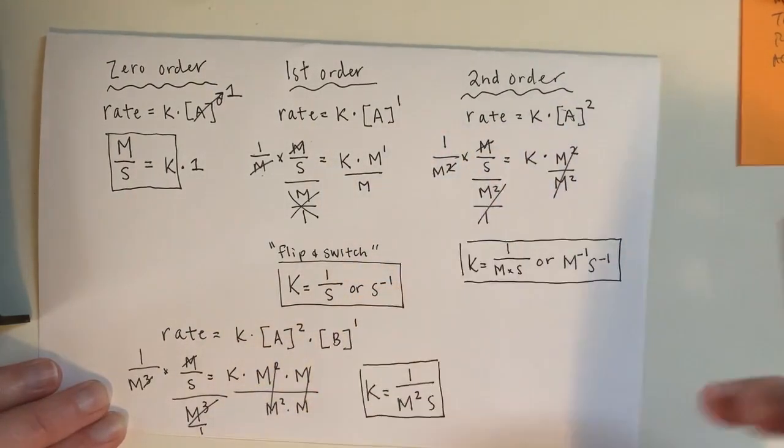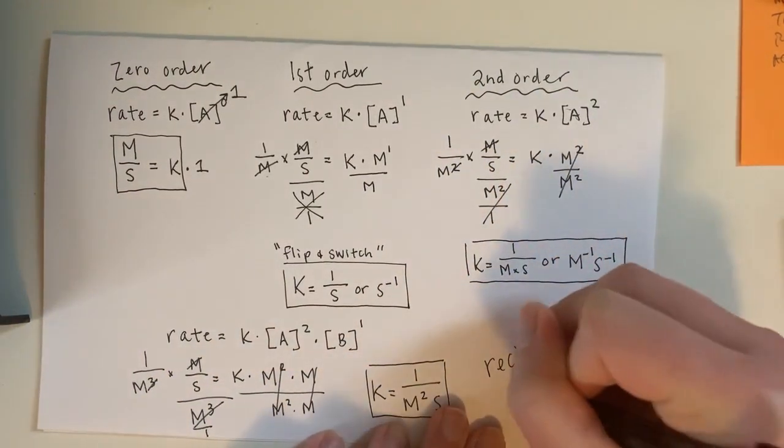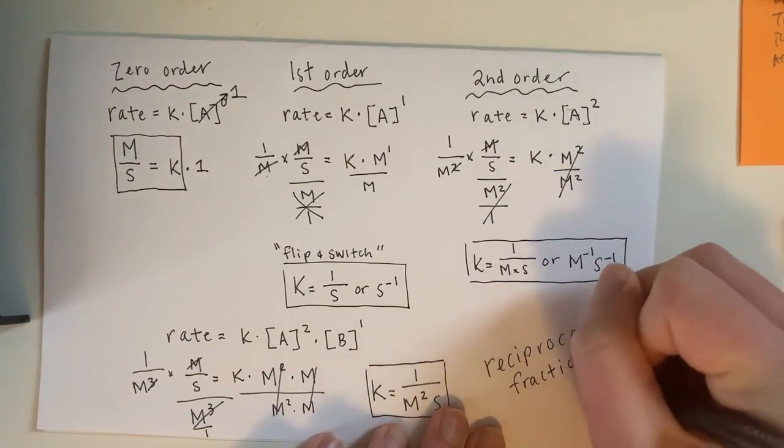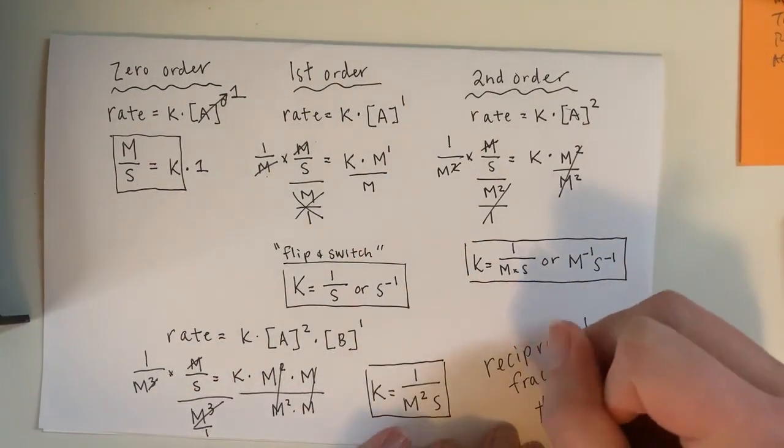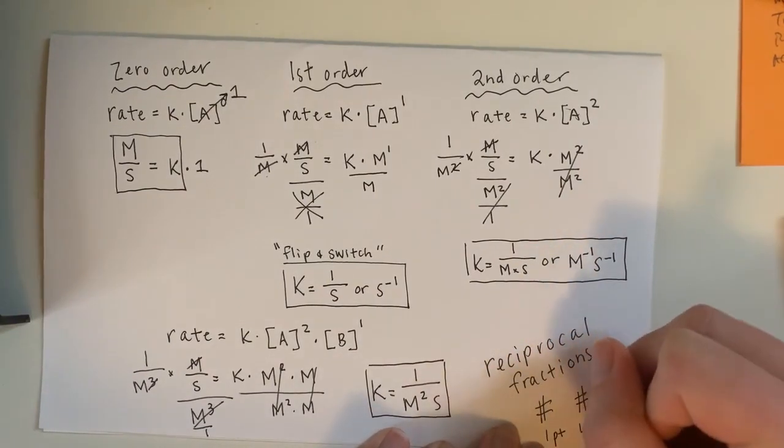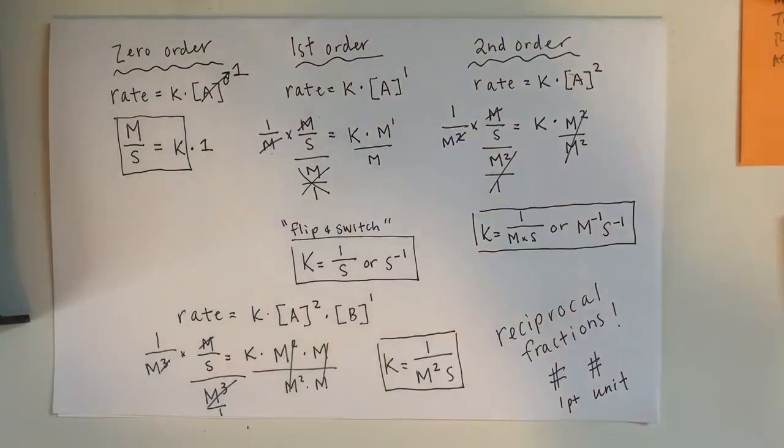So practice this unit math, getting familiar with it. If you are unsure how to use reciprocal fractions, let me know. I think that is the easiest way to do it. So every time you solve for K, you also need to solve for the unit. Typically on questions, one point is for the number. And one point is for the unit. So if you have any questions, please let me know.